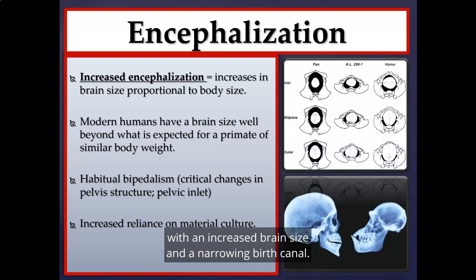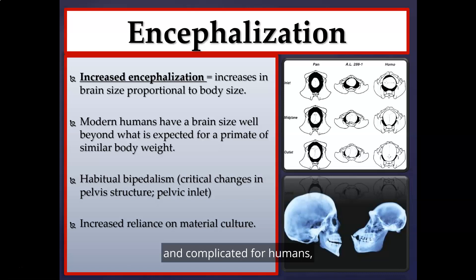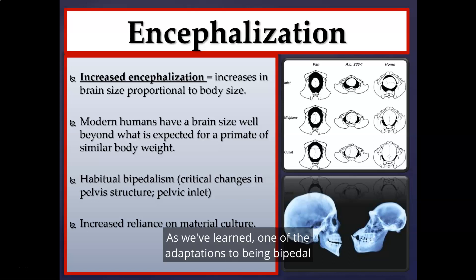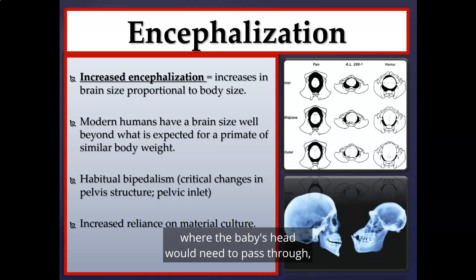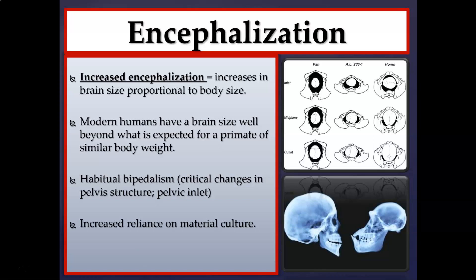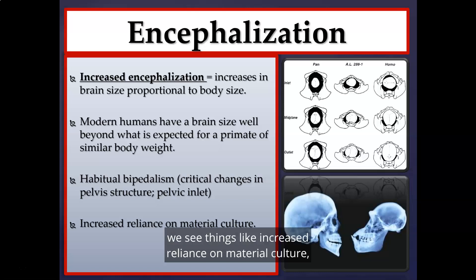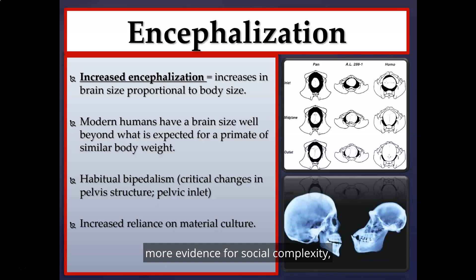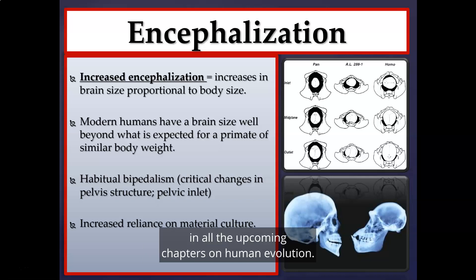There were evolutionary trade-offs with increased brain size and a narrowing birth canal — childbirth became much more dangerous and complicated for humans, especially from Homo erectus onward. One adaptation to bipedalism is that our pelvis has become more broad and bowl-shaped, but the pelvic inlet where the baby's head must pass through has become much more narrow. Along with encephalization we see increased reliance on material culture, more evidence for social complexity, the evolution of cooperative hunting, and the use of tools while hunting.